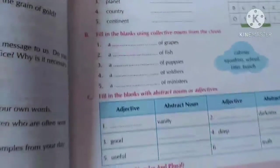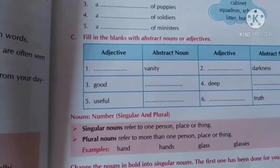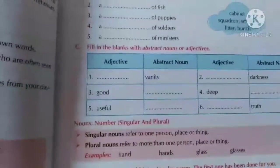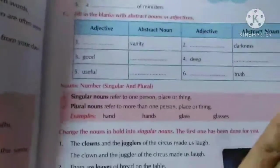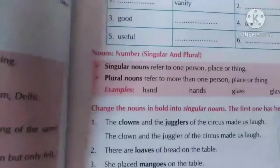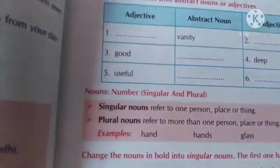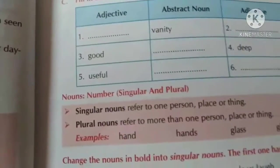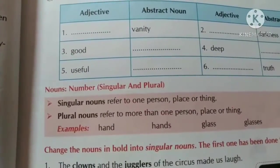After that we have all the exercises related to nouns: fill in the blanks with abstract noun or adjectives, then we have nouns number — singular or plural. Singular refers to one, plural refers to more than one person or thing.